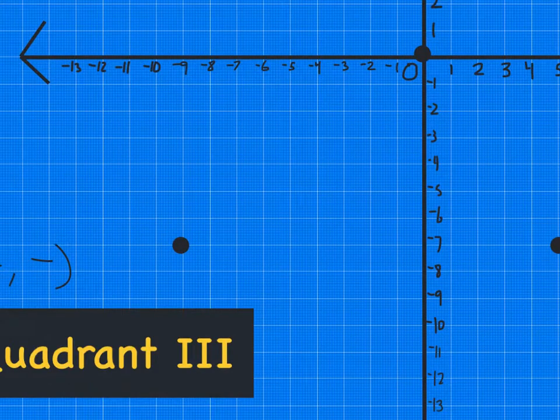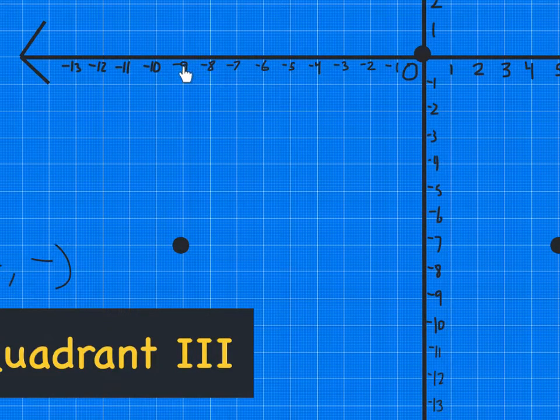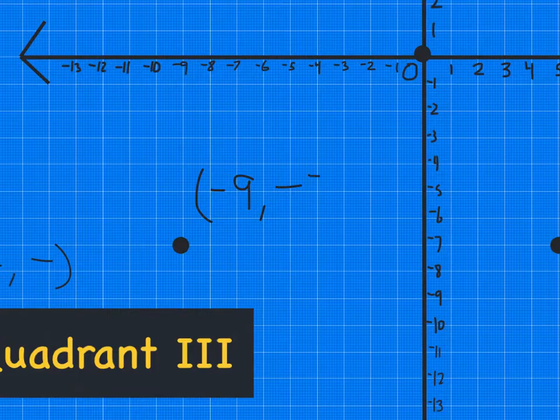Again, go ahead and pause the video. See if you can name this point in quadrant three. We start at zero. We go nine spaces to the left. Then we go down seven spaces. So my ordered pair here is negative nine, negative seven.